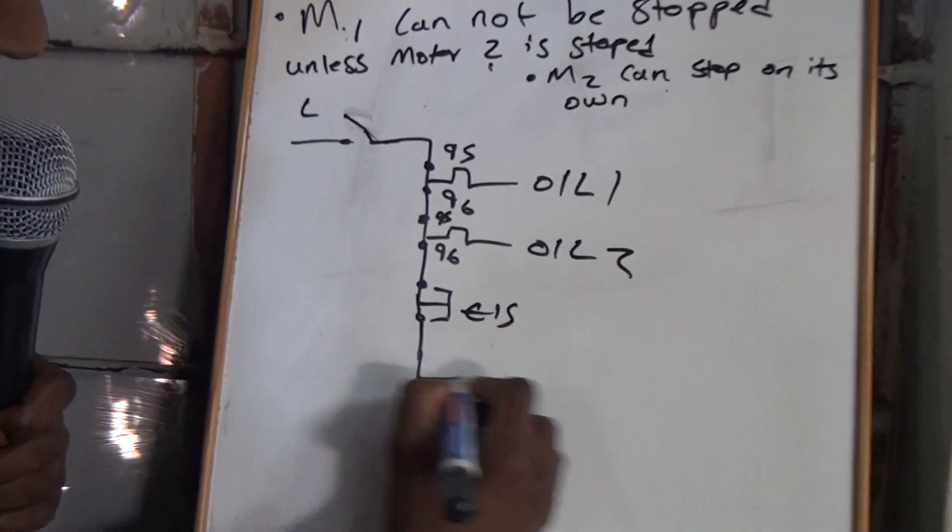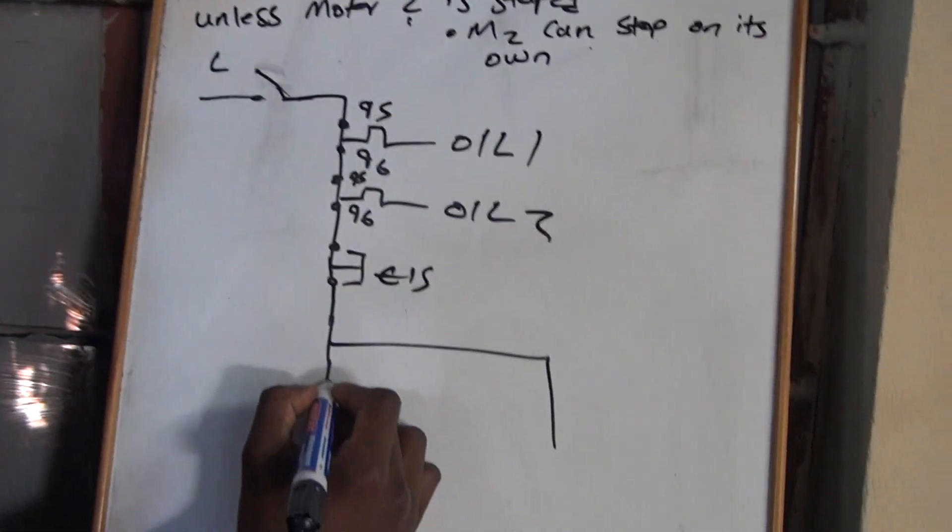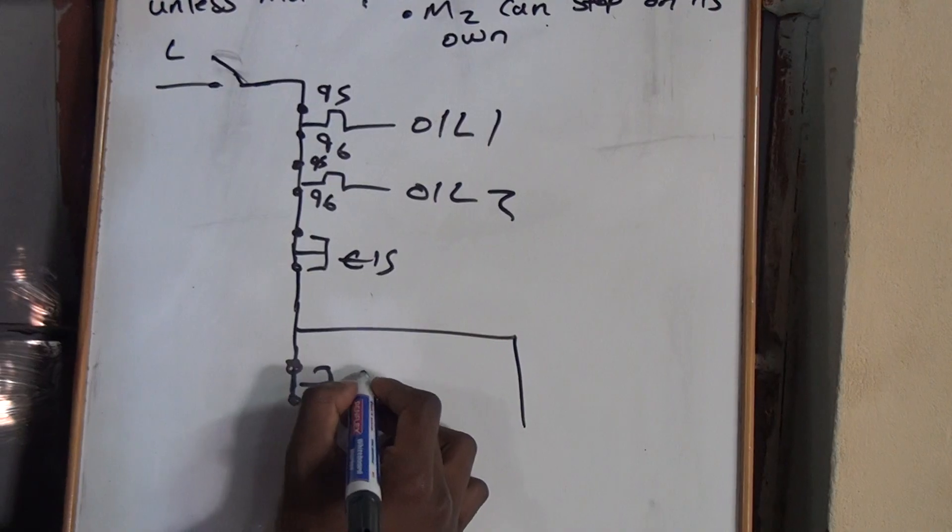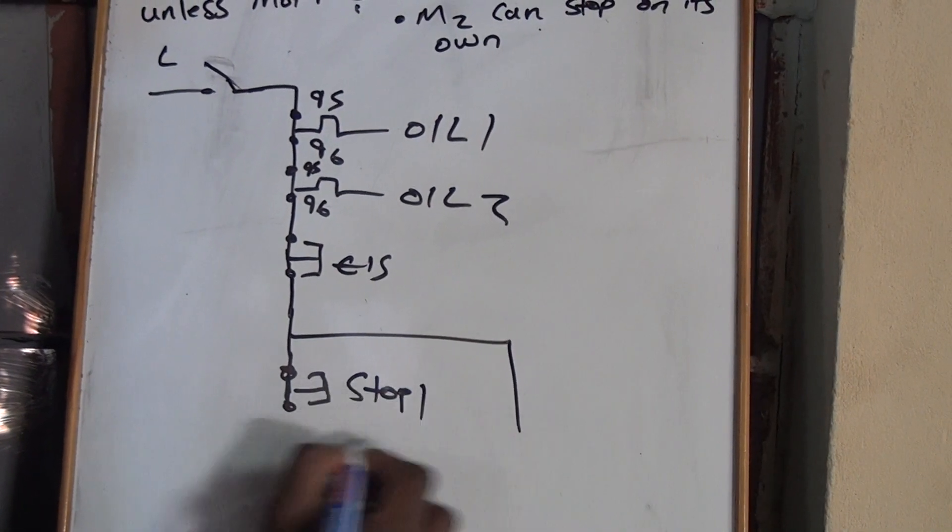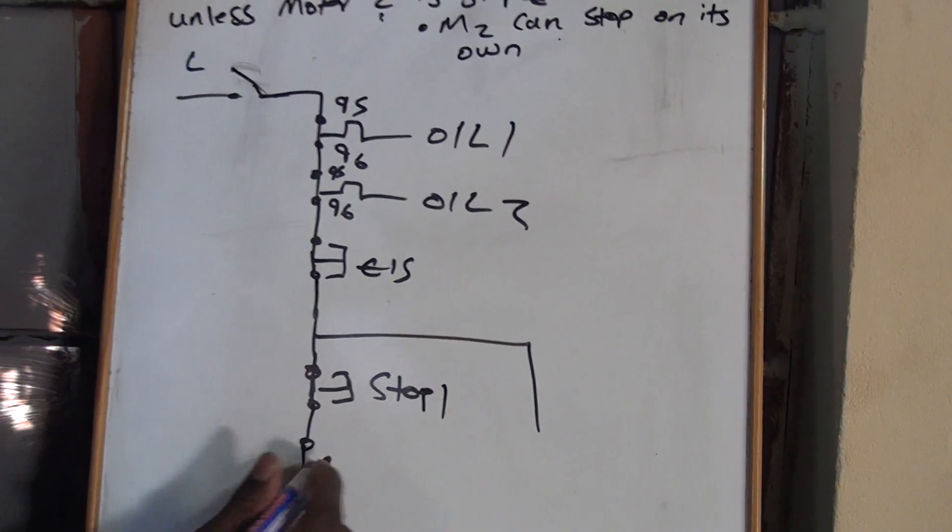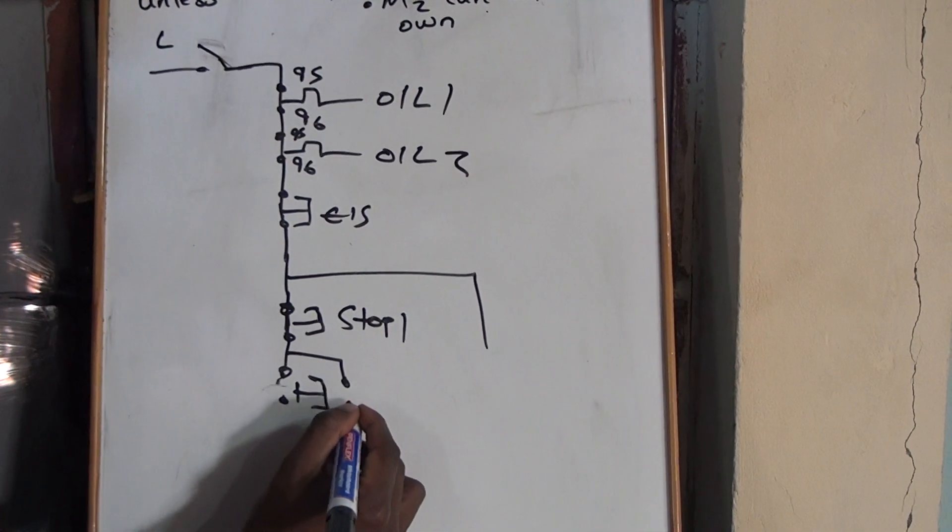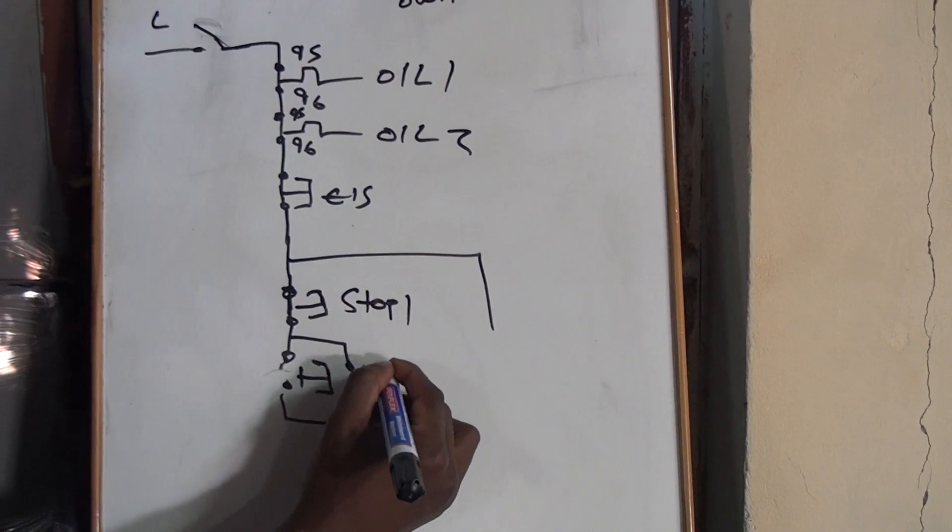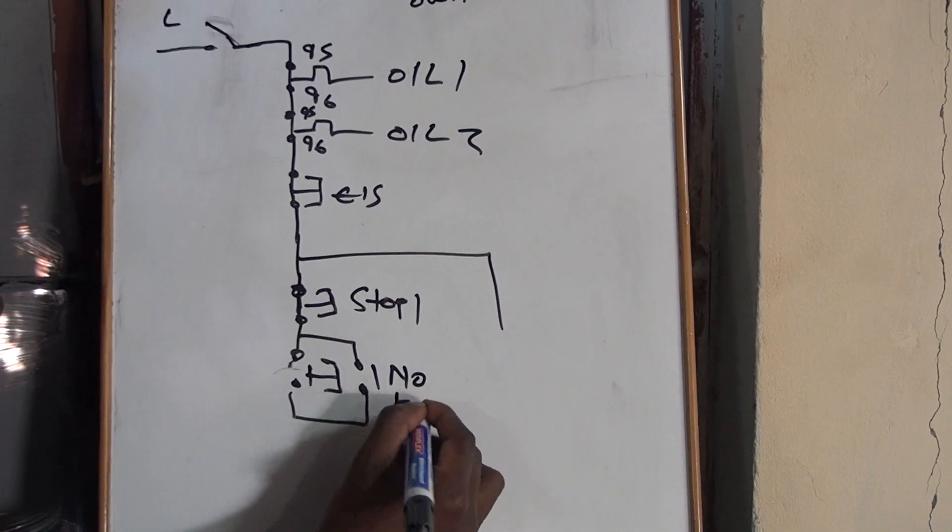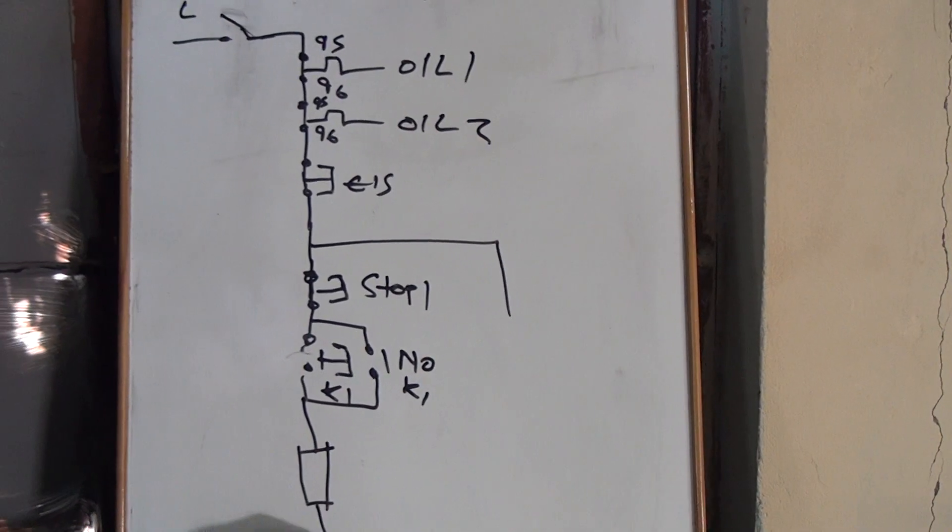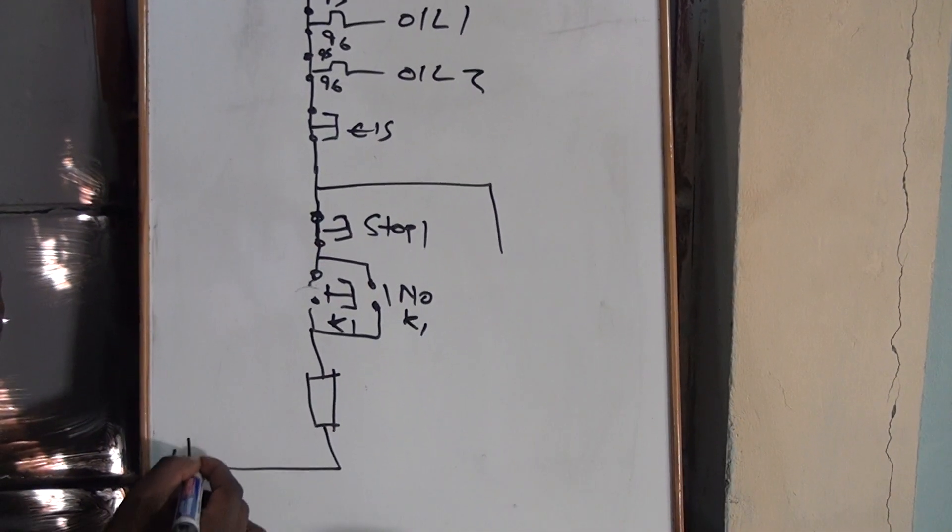And then, okay. Stop one. And then you will have your start button here. Normally open of K1. You have your K1. Goes to a line or a neutral.